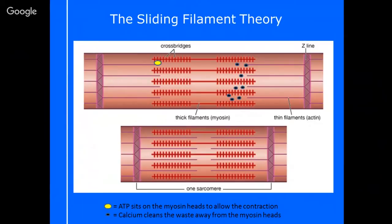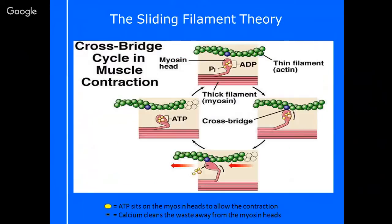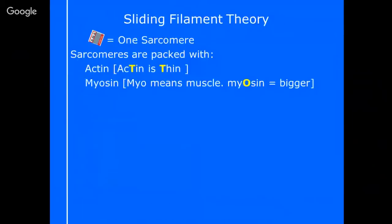We need this ATP to sit on the cross bridges between myosin and actin and allow that contraction to happen so it can move itself further forward and allow that shortening of the sarcomere itself. As it shortens and the ATP is being used, it leaves all its waste products behind, and those waste products are cleared away by calcium. So calcium cleans out all of that waste from the myosin heads and allows that contraction to happen again.